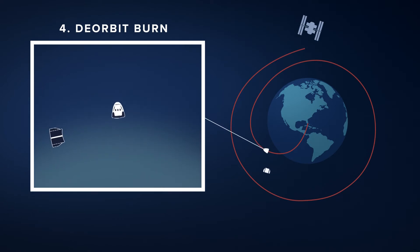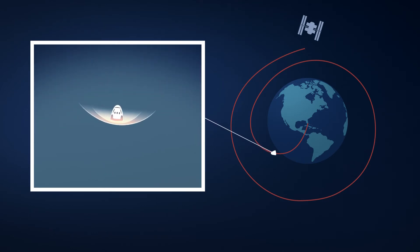Crew Dragon will enter the atmosphere around 17,000 miles per hour. Now the particles in the atmosphere will cause Dragon to slow down, but will also heat the outside of the spacecraft to over 5,000 degrees Fahrenheit.